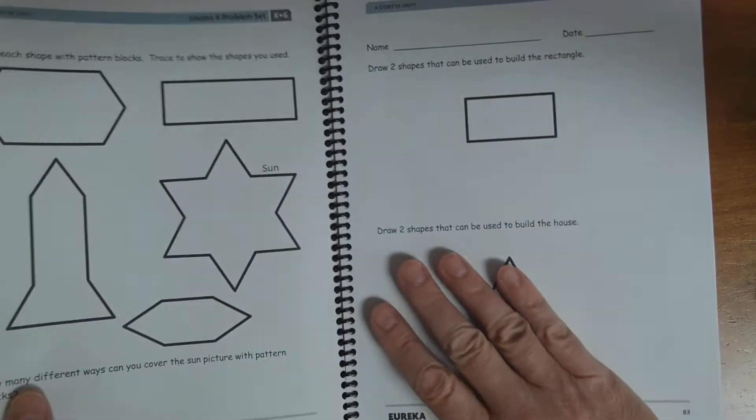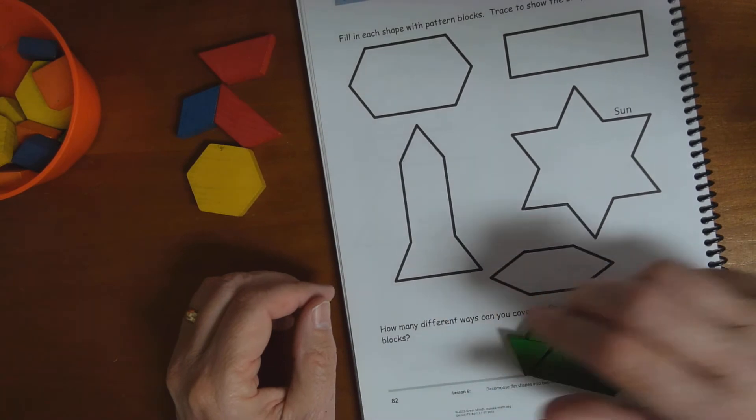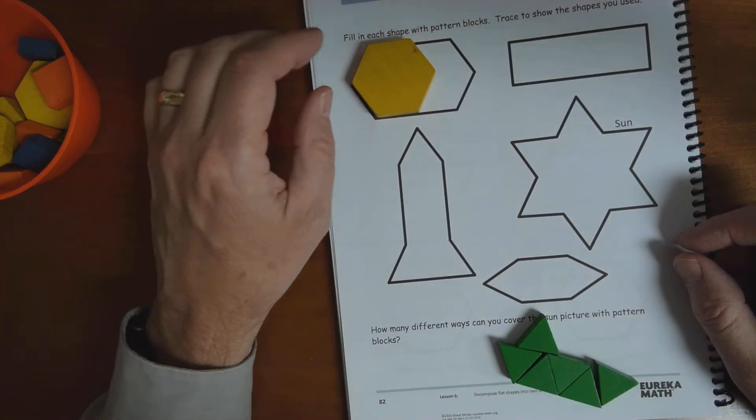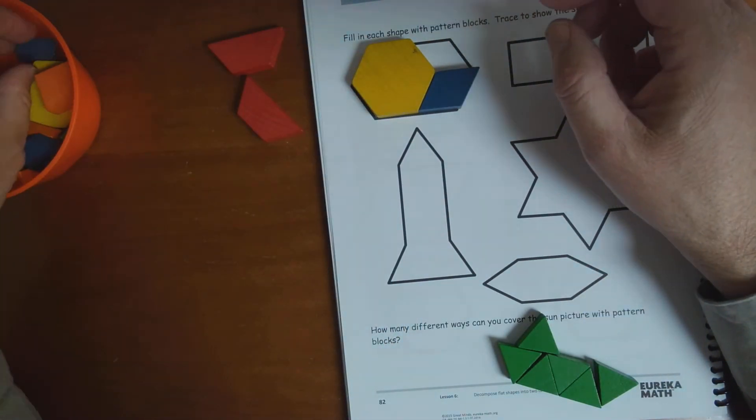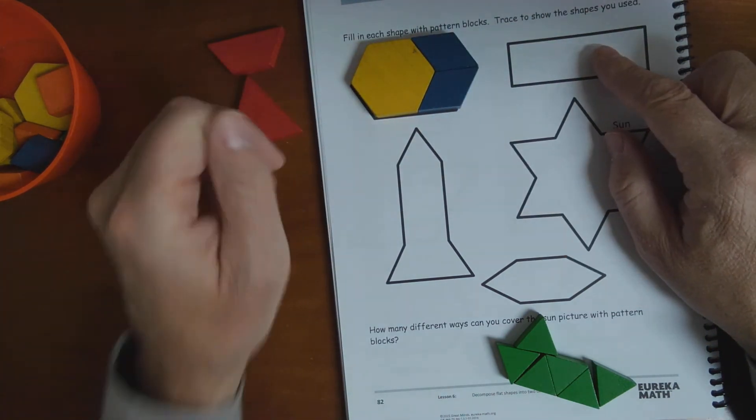All right, let's flip it over. Now here's some more different shapes to try and cover up. I think I could cover up this with that. But I'm going to need something else, won't I? Maybe that and that. That looks pretty good. What can I use to cover this up?